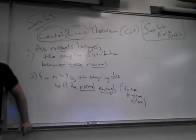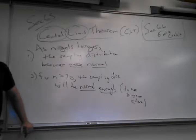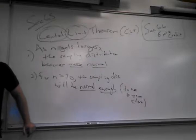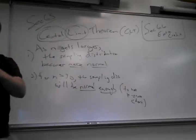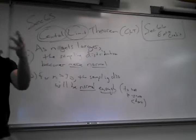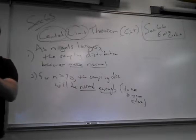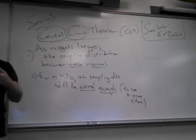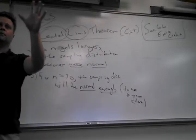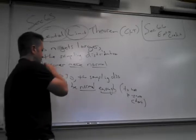Z-scores do not correspond directly to exact probabilities unless I know the distribution is normal. If I know it's normal, I can look at the chart. If I don't know, I can use Chebyshev's theorem — but Chebyshev's is not exact. It only tells you 'at least this much,' which isn't good enough. The difference between 75% and 99% is huge.